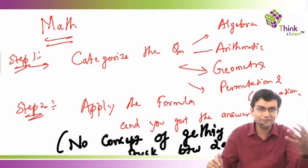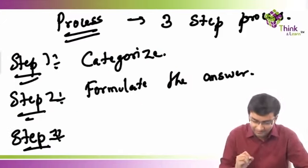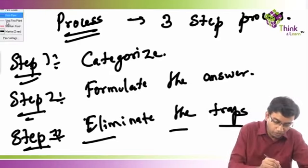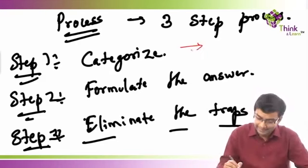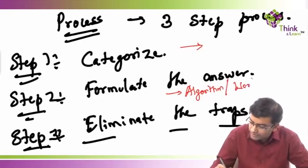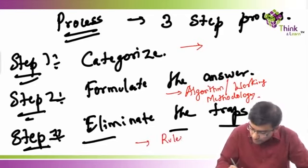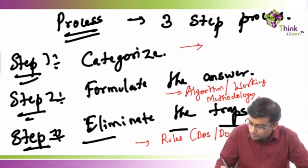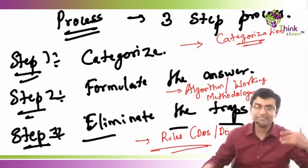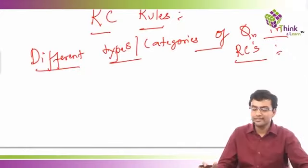You will always pick the right answer choice, or there will be a trap and you'll pick the wrong one. But in RCs, we have one step further. You categorize, you formulate, and then you eliminate the traps. This three-step process is what I'm going to follow while solving RC questions: categorize, formulate the answer, and then eliminate the traps using rules. The rules are basically the do's and don'ts. I'll also teach you the categorization process — to categorize, you need to know the different categories of questions in English RCs.